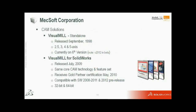Mechsoft's first CAM solution, Visual Mill, was released as a standalone product in September 1998. The current version is version 6.0, offering 2.5, 3, 4, and 5-axis indexing machining. They are currently in beta testing for version 2012, which will include continuous 5-axis as well. In July 2009, they released Visual Mill for SOLIDWORKS — featuring the same core CAM technology developed over nearly 13 years — and received Gold Partner status in May 2010. It is compatible with SOLIDWORKS 2008 through 2012 pre-release, in both 32-bit and 64-bit.